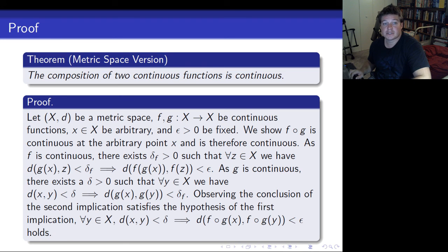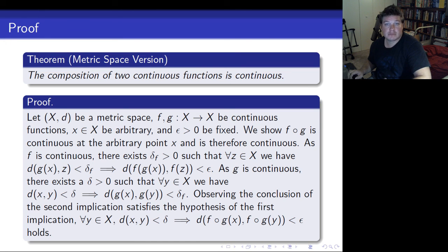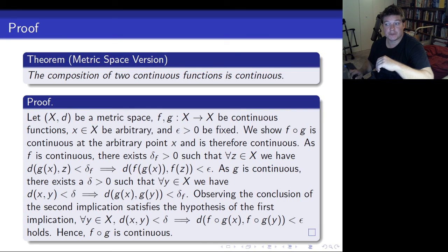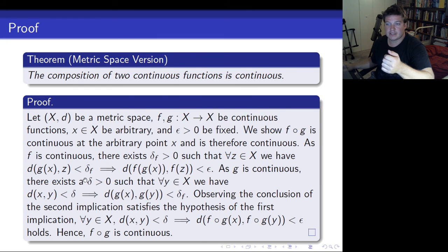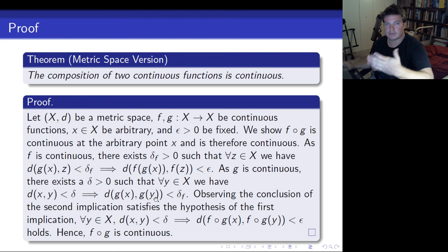Observing that the conclusion of the second implication satisfies the hypothesis of the first implication — this piece here is the same as the hypothesis here, with g(y) playing the role of z — we have: for every y in X, the distance between x and y less than delta implies that the distance between f(g(x)) and f(g(y)) is less than epsilon. Hence f of g is continuous. A priori, for every z if the first part is true then this is true, so this specific z will work. We start with a stronger statement and weaken it by feeding it through the functions.